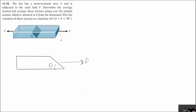The first thing we have to do is to decompose that force P into an axial force or normal force through the oblique area. This is going to be the oblique area at an angle of theta, and we have an axial or normal force and we have a shear force. So we can decompose this force.